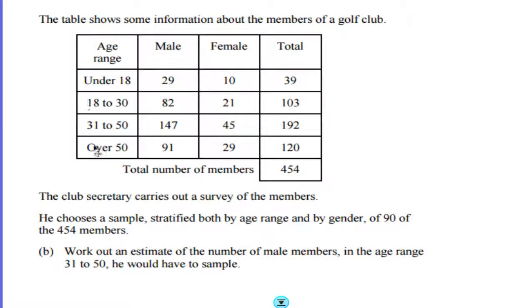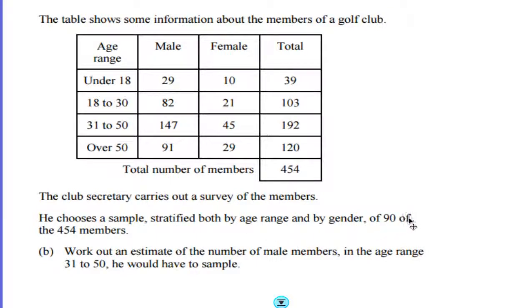Let's look at a typical question. The table shows some information about the members of a golf club — the age range, gender, and numbers in each category. The club secretary carries out a survey of the members and chooses a sample stratified both by age range and by gender, selecting 90 of the 454 members.